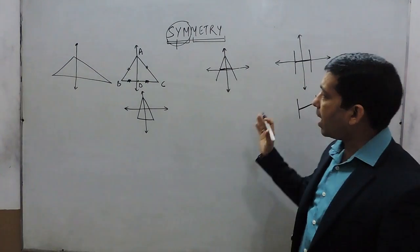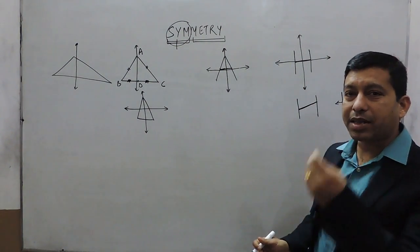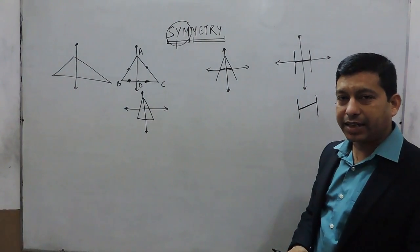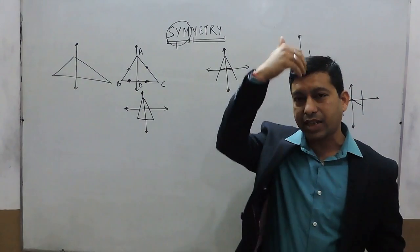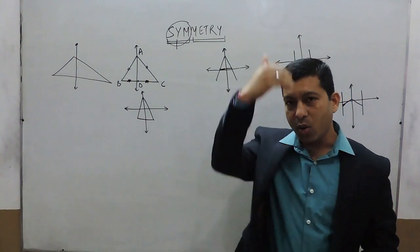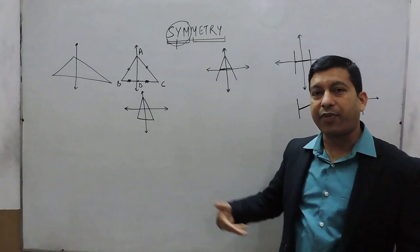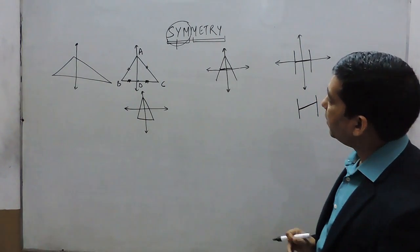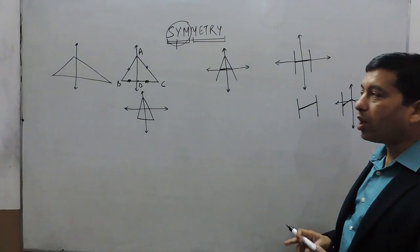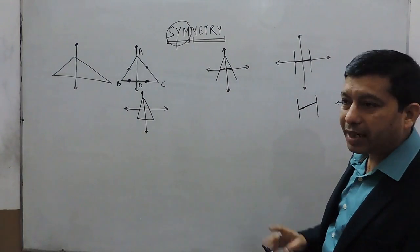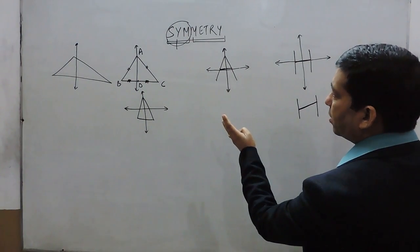If we look at plants and animals, we can say all animals are symmetrical in their nature. Like if we talk about ourselves, if we divide ourselves vertically, we are symmetrical. But if we divide ourselves horizontally, we are not symmetrical. All animals are symmetrical, while all plants are non-symmetrical because they do not grow in the same shape or size on both ends.